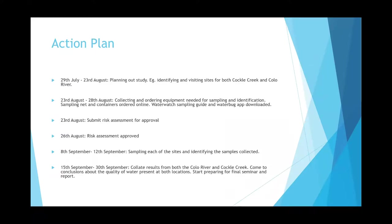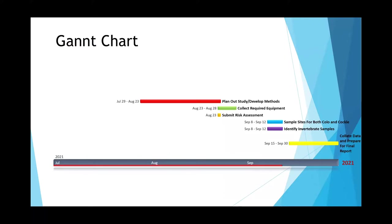This is just the action plan. We've completed most of the tasks here for the 15th of September to the 30th of September — we're going to collate our results from both the Kolo River and Cockle Creek, come to conclusions about the quality of water, and what each invertebrate species means for the quality of water. We'll then start preparing for the final seminar report. This Gantt chart summarizes all of that.